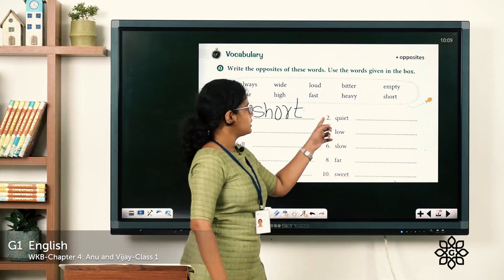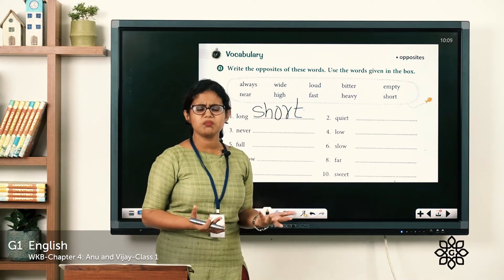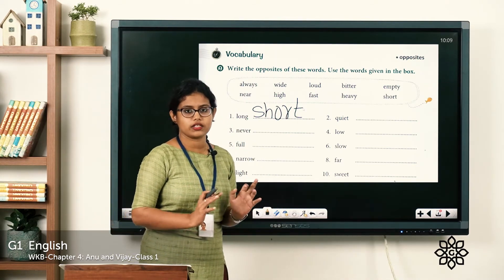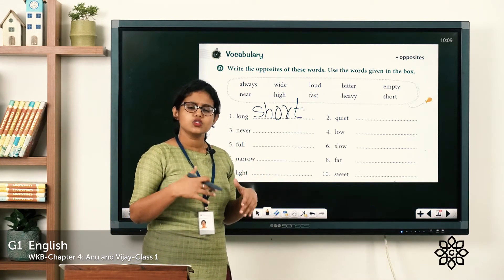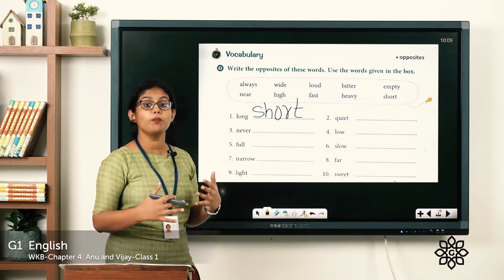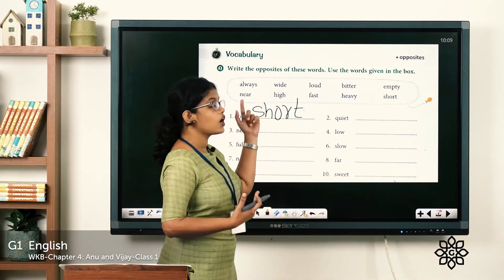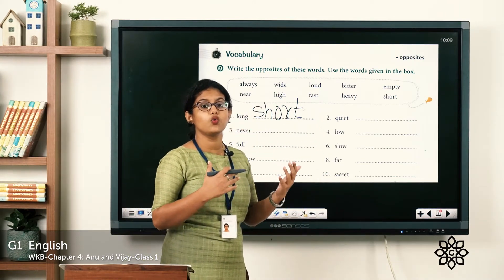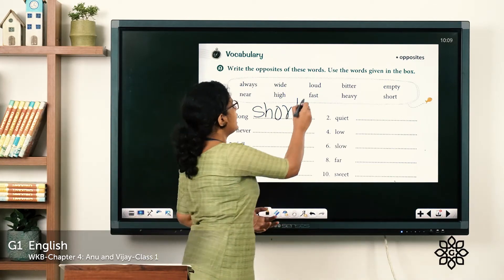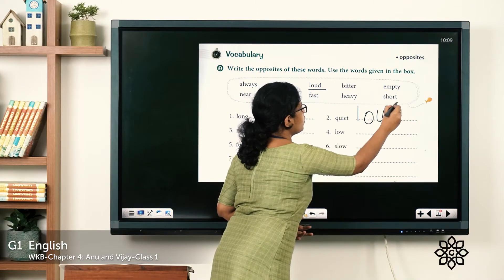The second word: 'Quiet.' What is the meaning of quiet? Quiet means silent — 'She is quiet' means very silent. So what is the opposite word for quiet? One who makes sound. The opposite for quiet is loud. Loud means one who makes so much sound. The opposite word for quiet is loud: L-O-U-D.